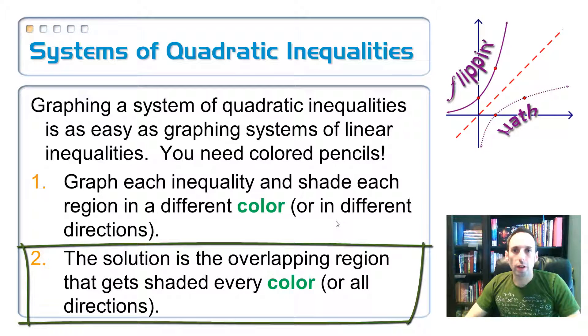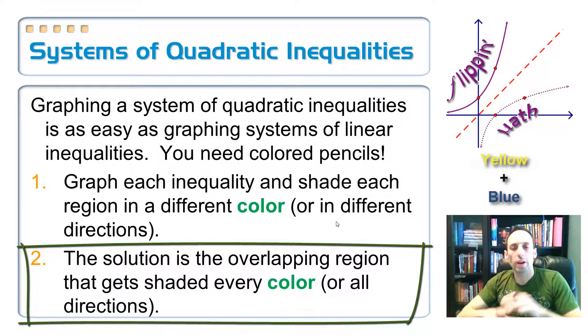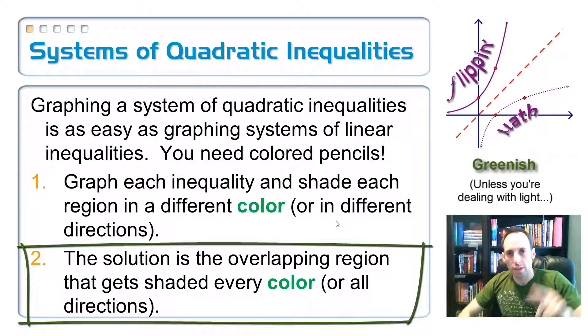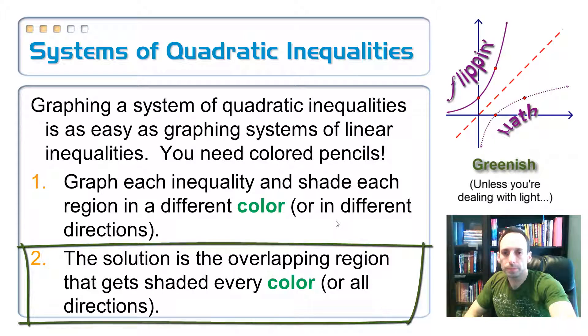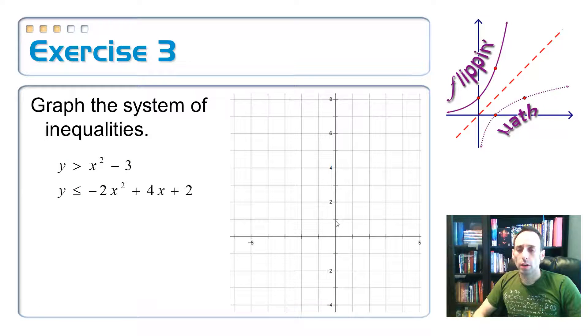For example, if I use a yellow plus a blue, it's whatever gets greenish. That's what my answer is going to be. Let's give it a try on this system of inequalities.